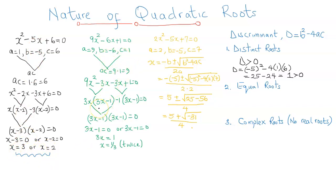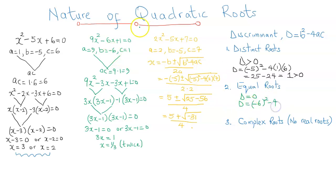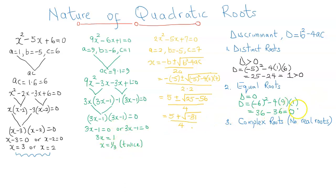Now let's focus on the second equation: 9x squared minus 6x plus 1 equal to 0. Why did it produce equal roots? Because the discriminant is equal to zero. If we calculate: b is negative 6, so negative 6 squared is 36, minus 4 times 9 times 1, which is also 36. So 36 minus 36 equals zero. We can see that this quadratic equation produced equal roots because the discriminant is equal to zero.